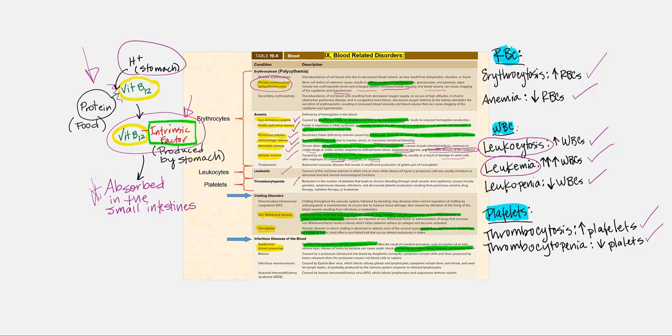Clotting disorders include von Willebrand disease, where the person is unable to produce the von Willebrand factor. We know the importance of the von Willebrand factor in that it's what allows the platelets to adhere and potentially activate the circulating platelets. And we need to form the platelet plug before we can form a normal blood clot. Hemophilia is where the individual is lacking certain clotting factors, which we'll soon discuss.